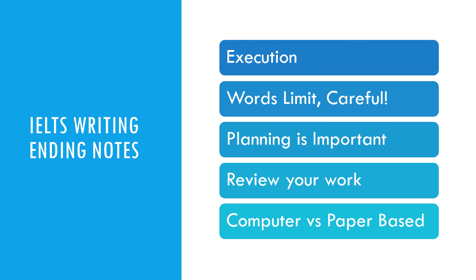Previously I was attempting task 2 first and then task 1, and I always ended up writing around 350 to 400 words for the essay, which was too many. So I made up my mind to write within the word limit — for the essay, my target was 250 to 270 words, and for the letter, 150 to 170 words. This time I attempted task 1 first.